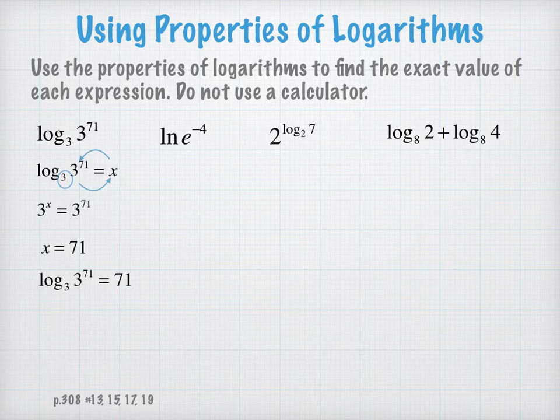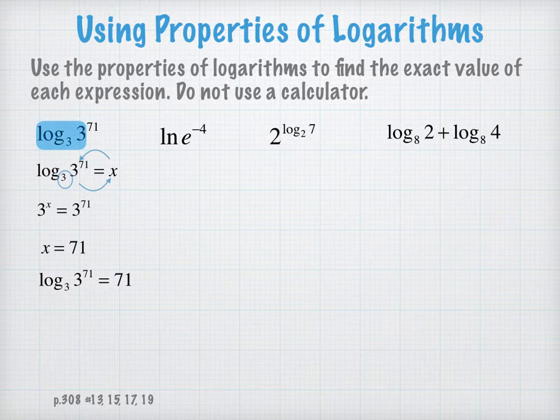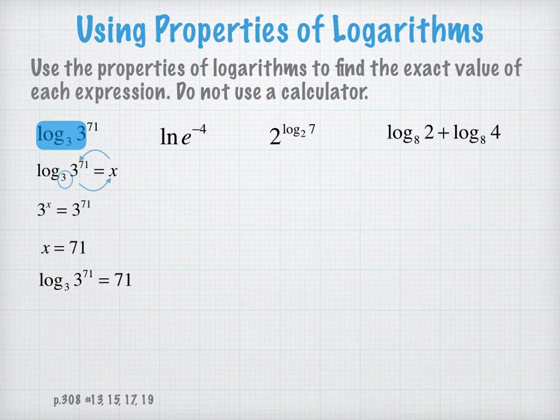So when you stop and take a look at that answer, you can notice that in a sense, when we have notation that looks like this, that kind of all goes away and your answer is going to be the 71. Let's look at the next example.